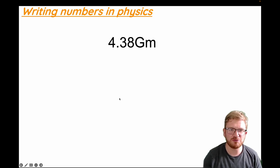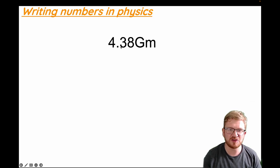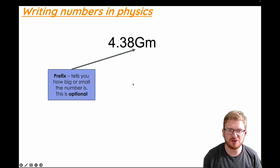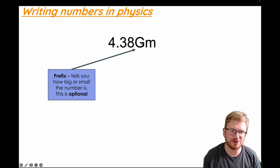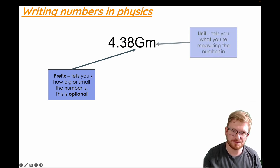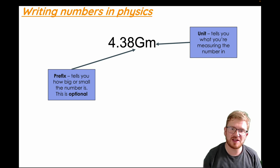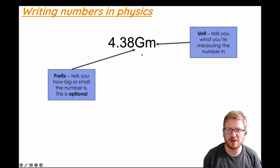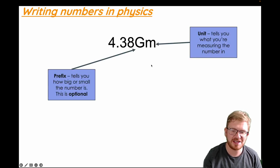We're going to go straight on to how we write numbers. This is a classic example of something you might see: 4.38, and look at this capital G and a little M. We break those up into two different things. There is starting with a prefix, so that's the capital G — that tells you how big or small the number is, and it is optional. This is then followed in this case by M, that's the unit, and that tells us what you're actually measuring this number in.